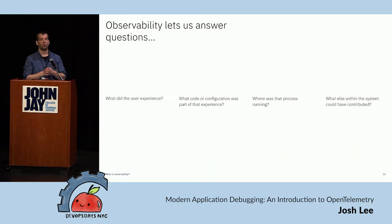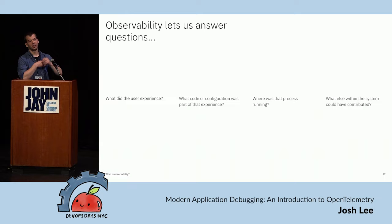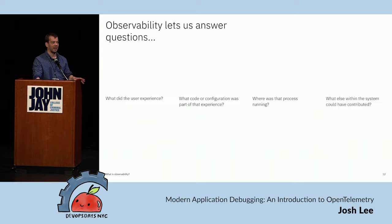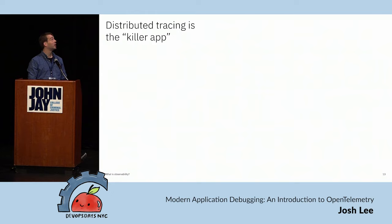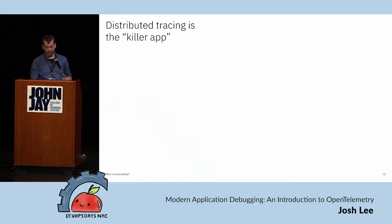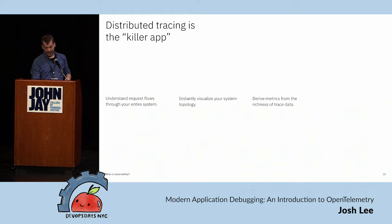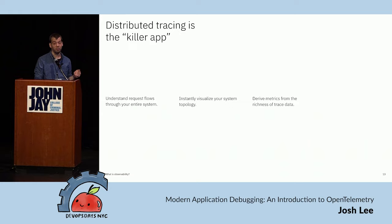A common scenario I hear about is the 'bad neighbor' scenario — where a process on a node is consuming resources in a sneaky way that affects other services on that node. You can't diagnose that without a complete understanding of your system topology. That's why distributed tracing is the killer app for observability. It lets us understand how requests flow through our system, create an entire topology, derive RED metrics from traces, and enrich logs by attaching them to a trace.